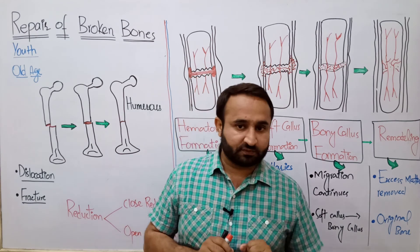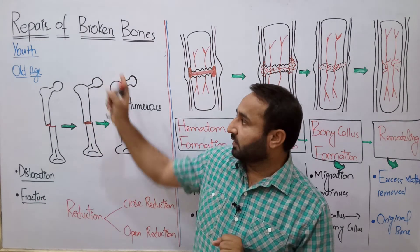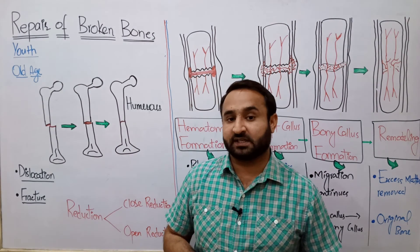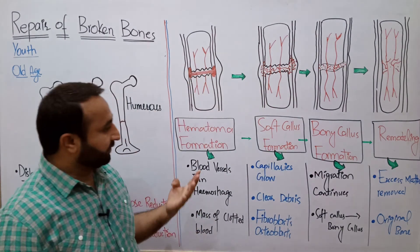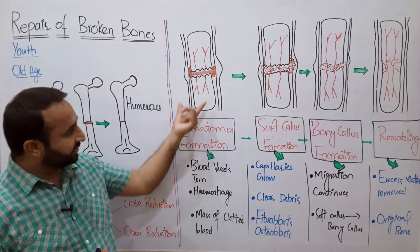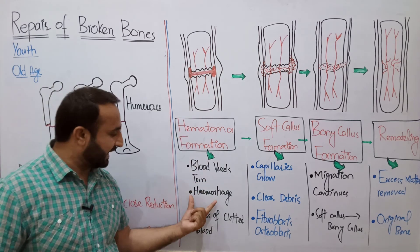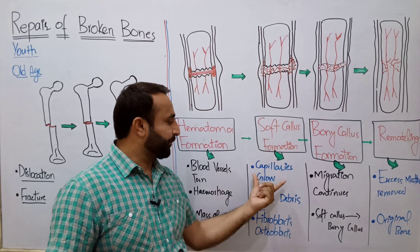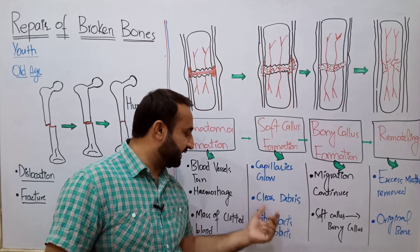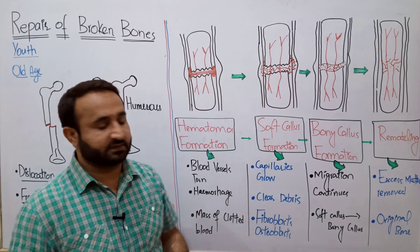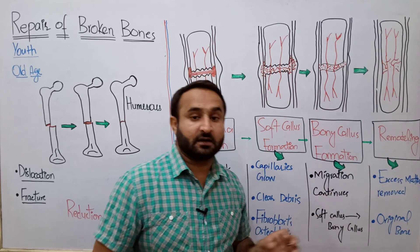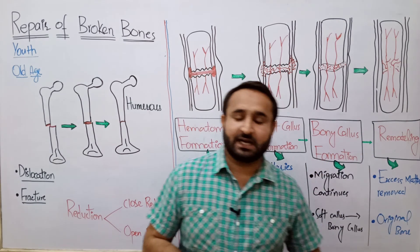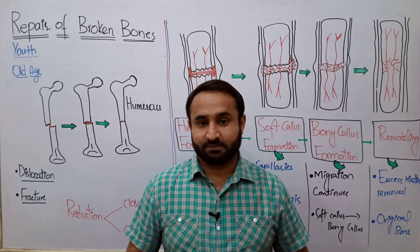Summary: We discussed young and old age causes of broken bones, dislocation versus fracture, and closed and open reduction. Then we discussed the four phases of bone repair: Phase 1 — hematoma formation, where blood vessels tear, hemorrhage occurs, and a mass of clotted blood forms. Phase 2 — soft callus formation, where capillaries clear debris and fibroblasts and osteoblasts migrate. Phase 3 — bony callus formation, where soft callus converts to bony callus. Phase 4 — remodeling, where excess material is removed and the bone returns to its original shape.